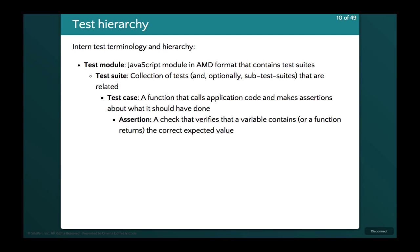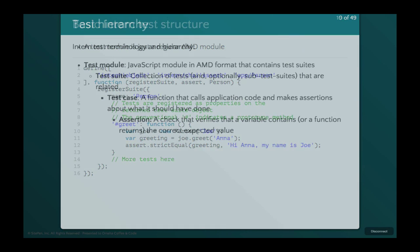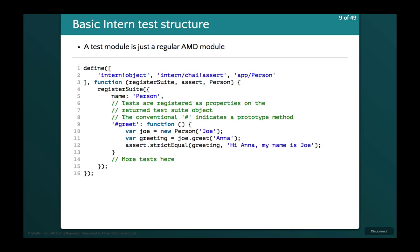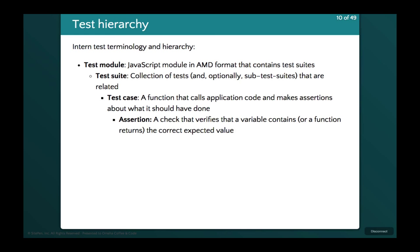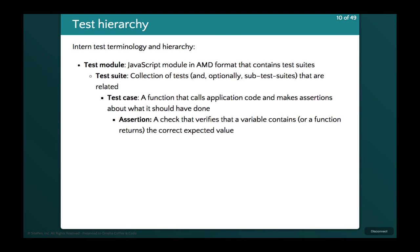When we develop tests, we have a hierarchy. We have the test module itself — the whole file that brings in everything we need. We have the test suite, where we call register suite and give it a name — so this is the Person suite. Then we have test cases, like the greet test, and we can have multiple test cases. Inside each test case, it makes assertions. The test case sets up the code, and then the assertions ensure the code is running the way we expect, or it will complain.